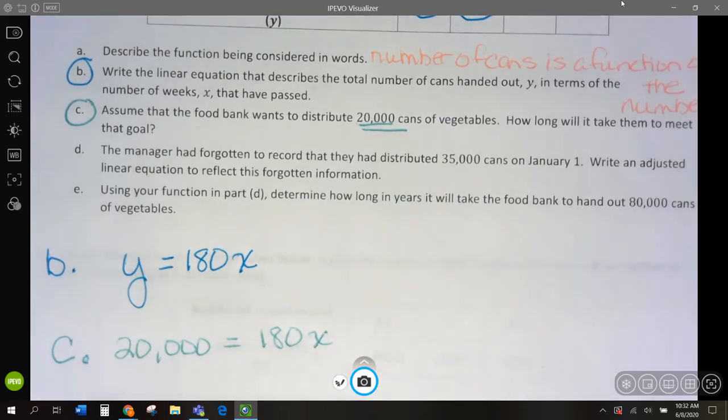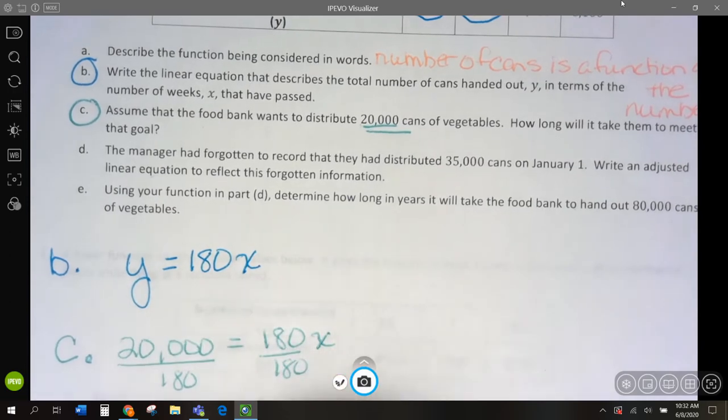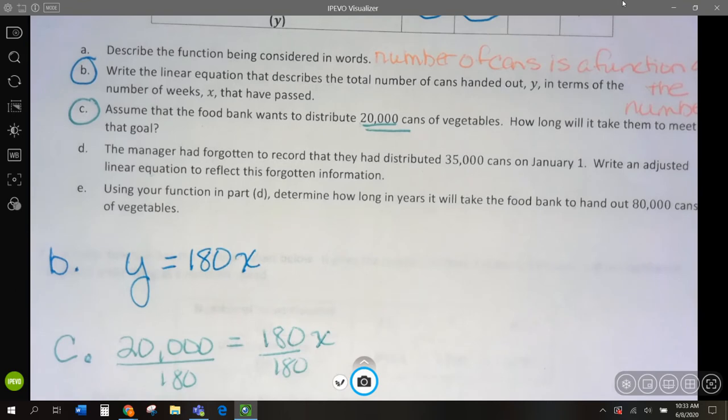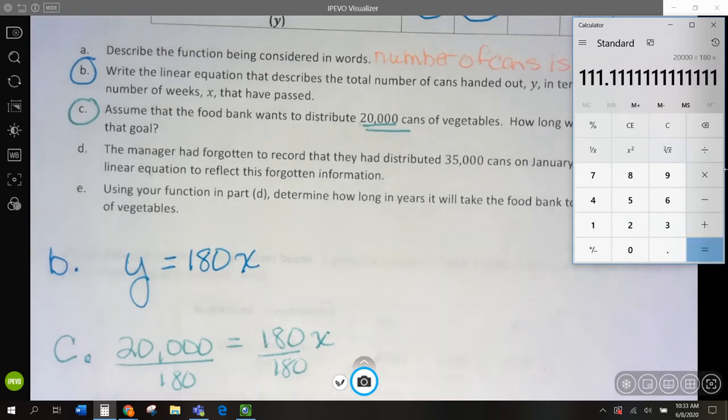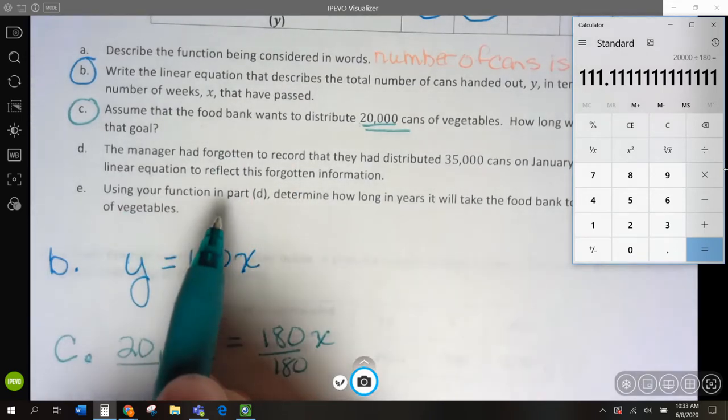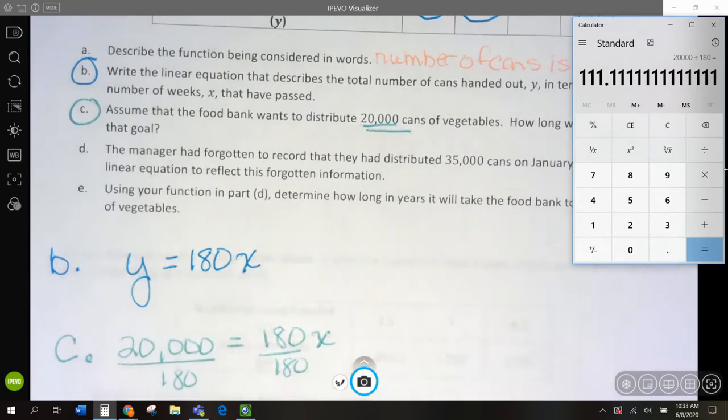To solve this, we're going to divide by 180. And our x is going to equal, let's do this, 20,000 divided by 180. Let's round this to the nearest whole number because we're talking about weeks. What would we round this to be?